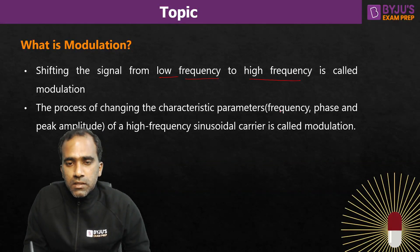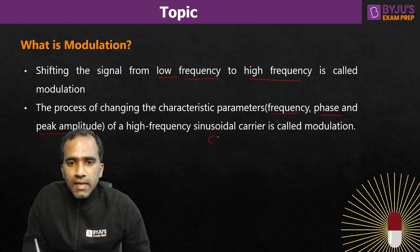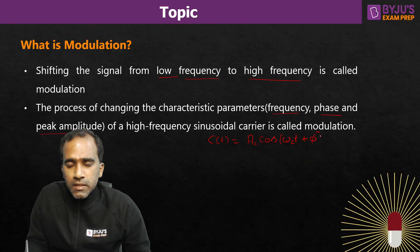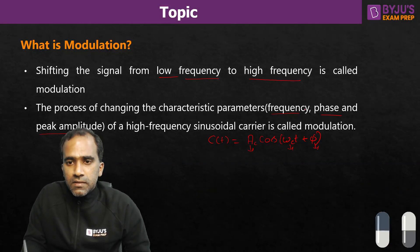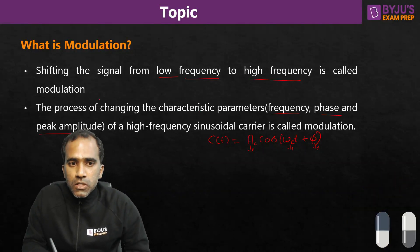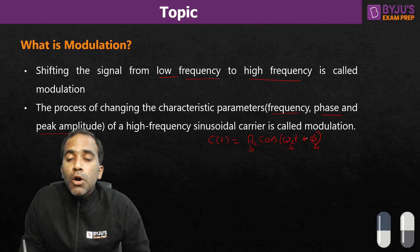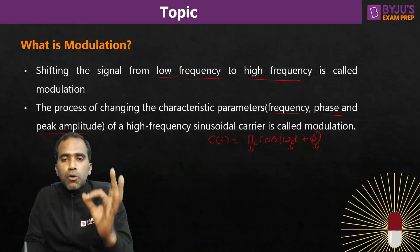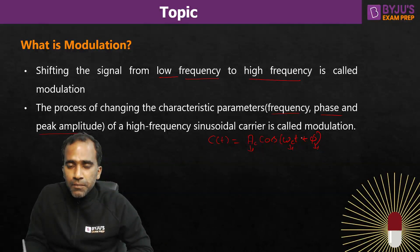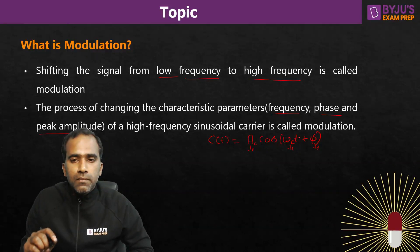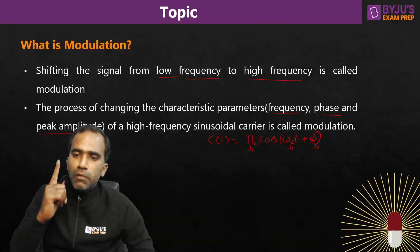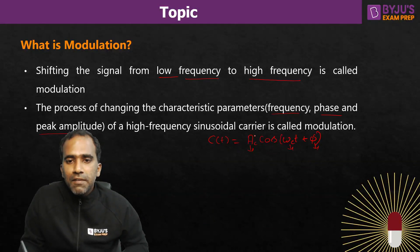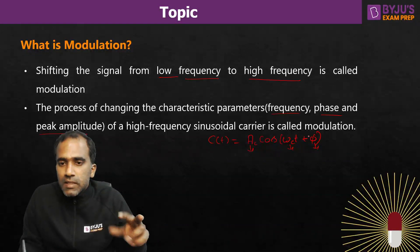The process of changing the characteristic parameters of a high frequency sinusoidal carrier — frequency, phase, and peak amplitude — is also modulation. Generally we represent the carrier as C(t), a sinusoidal signal with three parameters: peak amplitude, frequency, and phase. These three are called characteristic parameters. If you modify any one of these parameters according to the message, that is called modulation. We modify only one of them at a time, not two or three.